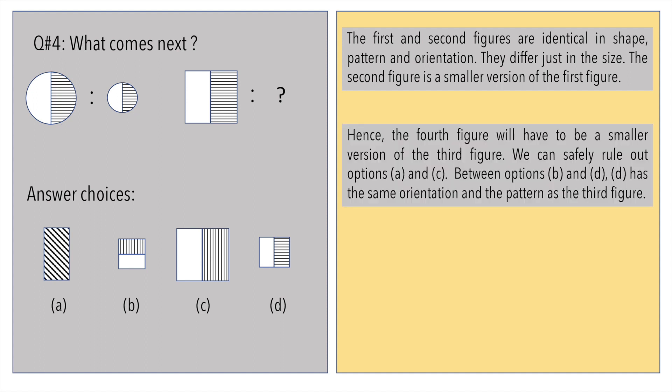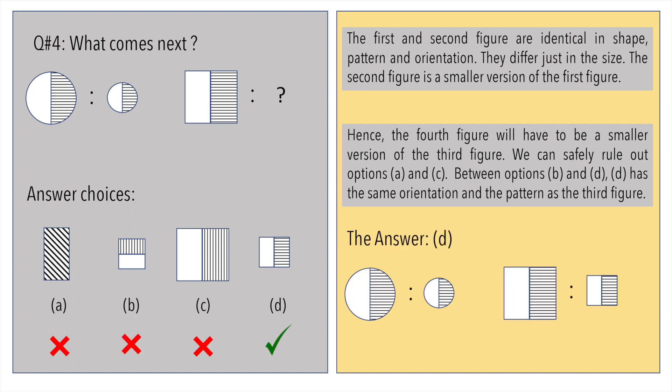As per this logic, the fourth figure will have to be a smaller version of the third figure. With this, we can safely rule out options A and C. Between options B and D, while both the squares are smaller in size, only option D preserves orientation as that of the third figure. The answer is option D.